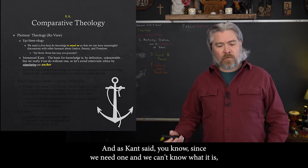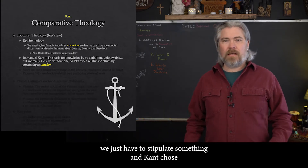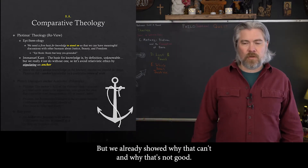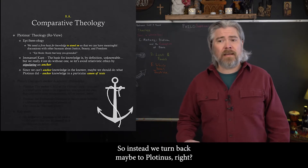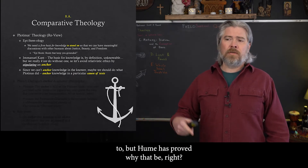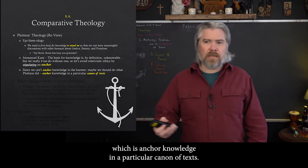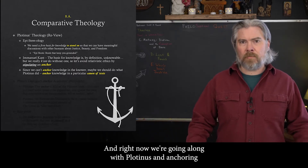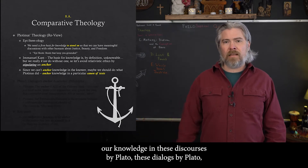We have to have something that anchors our discourse and discussion, particularly about knowledge, truth, and ethics. As Kant said, since we need one and we can't know what it is, we just have to stipulate something. Kant chose to follow Descartes, stipulating the knower as the anchor — but we've already shown why that's not good. So instead we turn back to Plotinus: since we can't anchor knowledge in the knower the way Descartes wants, and Hume has proved why that can't be, then maybe we should do what Plotinus did — anchor knowledge in a particular canon of texts.